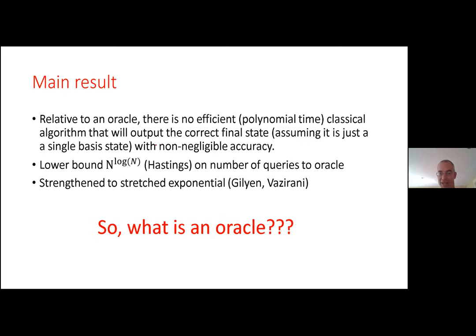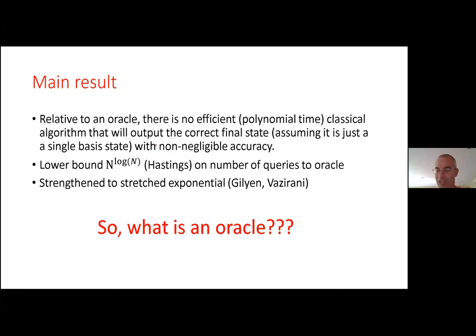Still there's the question: when you combine these two things, can there really be quantum effects that make it beyond the power of classical computing when you have no sign problem? The main result is that, relative to an oracle, there's no efficient (polynomial-time) classical algorithm that solves this adiabatic quantum computing problem — in the sense of figuring out the final basis state with non-negligible accuracy, even under very strong constraints that the final configuration is a single basis state.